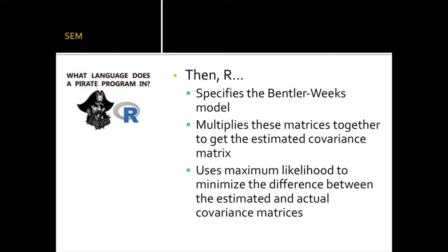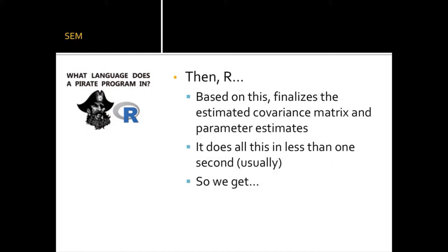The Bentler-Weeks model will be specified secretly by R based on the equations you set up. It will multiply the matrices together to get the estimated covariance matrix based on your model. Then maximum likelihood — the default method — is used to minimize the differences between the model covariance matrix and the actual data covariance matrix. Start values are plugged in, iterated, and the solution is finalized.